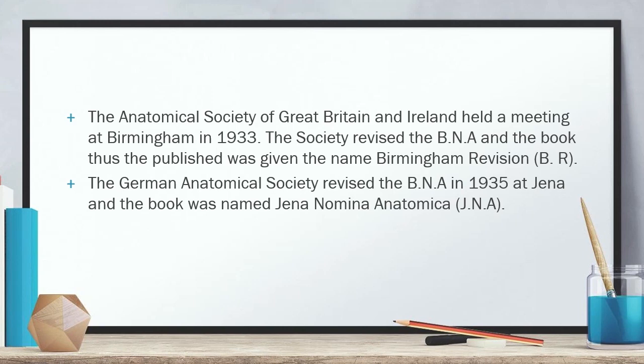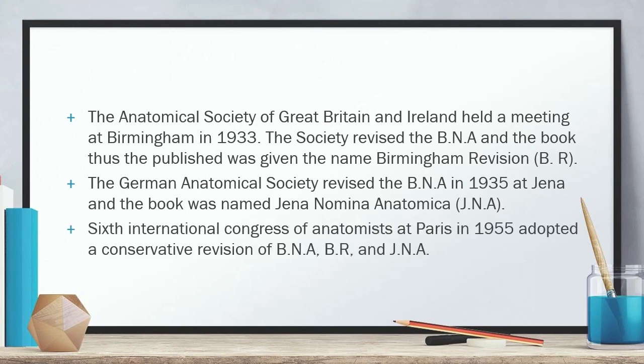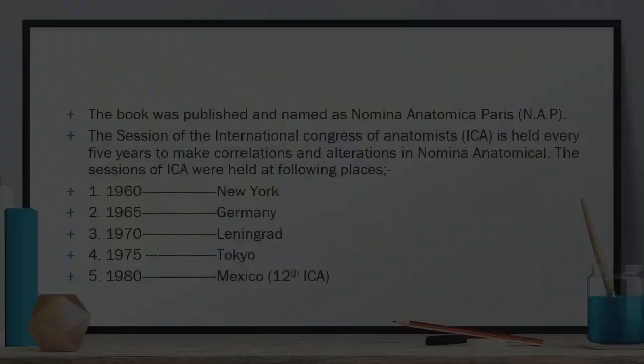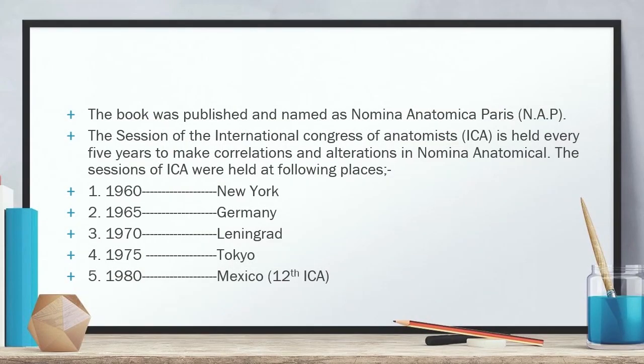The German Anatomical Society revised the BNA in 1935 at Jena, a city of Germany, and the book was named Jena Nomina Anatomica. The Sixth International Congress of Anatomists at Paris in 1955 adopted a conservative revision of the BNA, B.R., and GNA. A new book was created which was named Nomina Anatomica Paris, named after France.